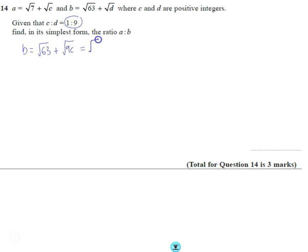Square root of 63 is square root of nine square root of seven plus square root of nine square root of C. So I just split this up into a nine times seven and I split this up into a nine times C.